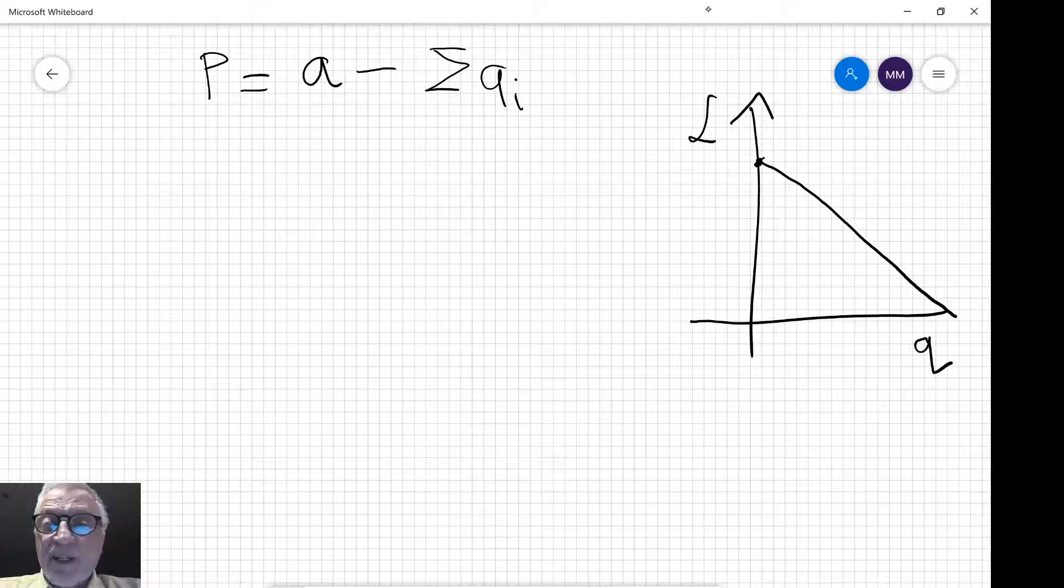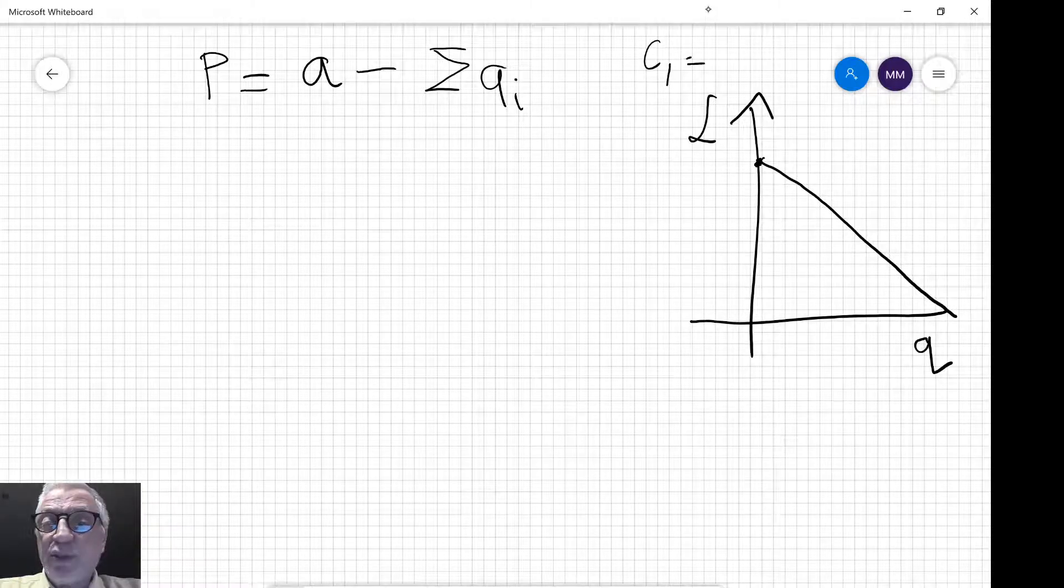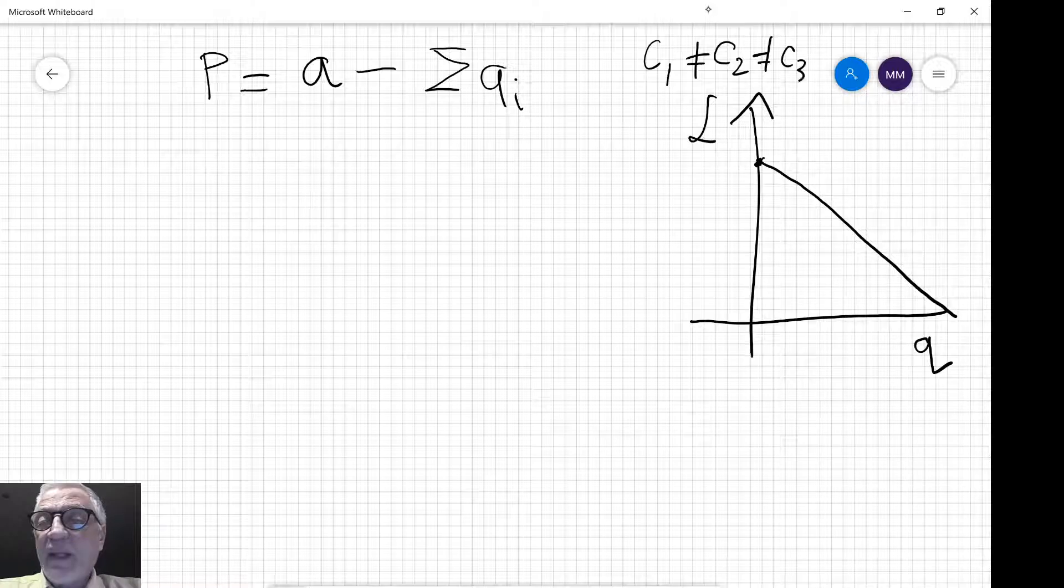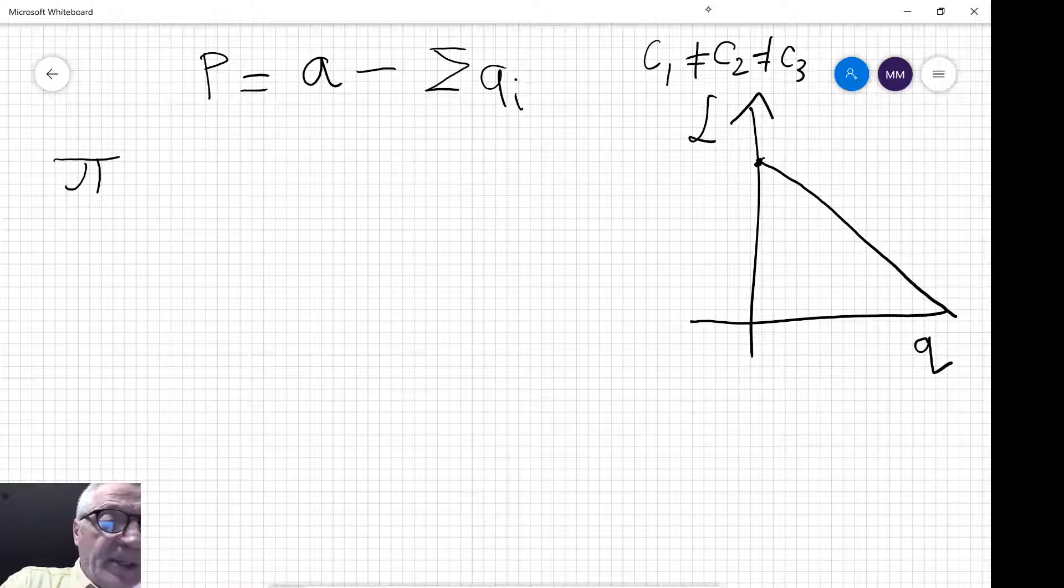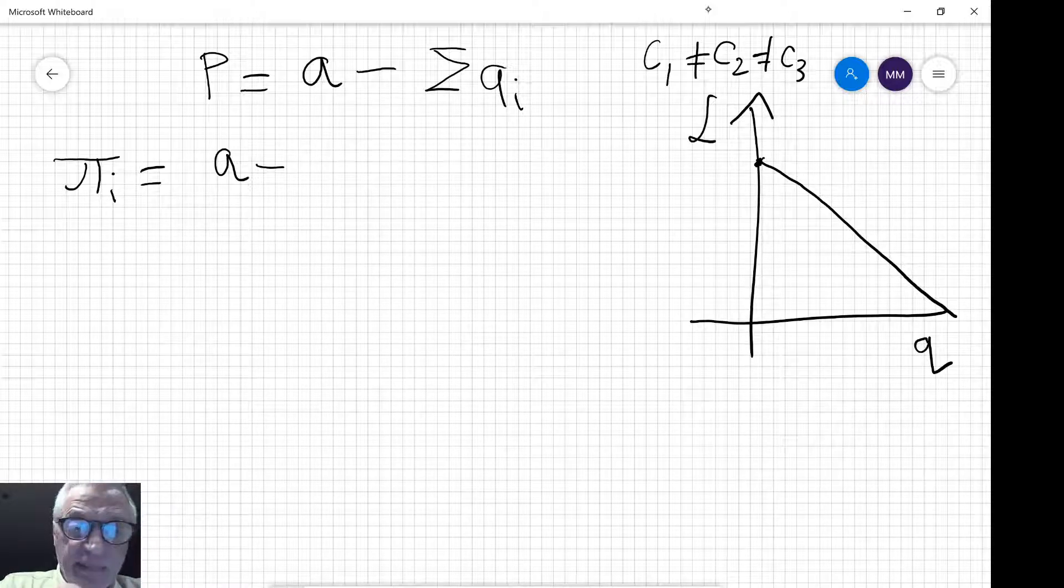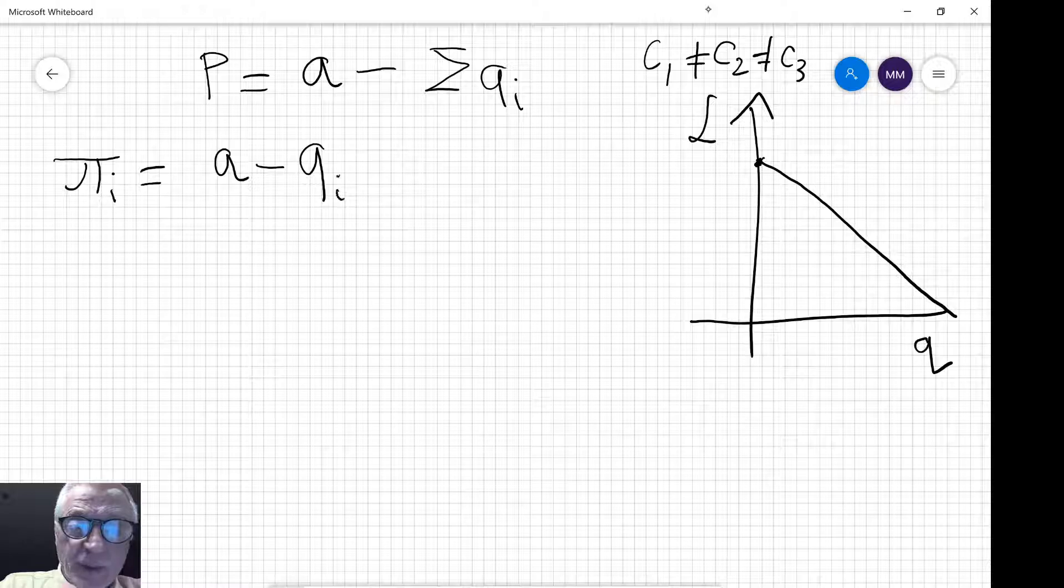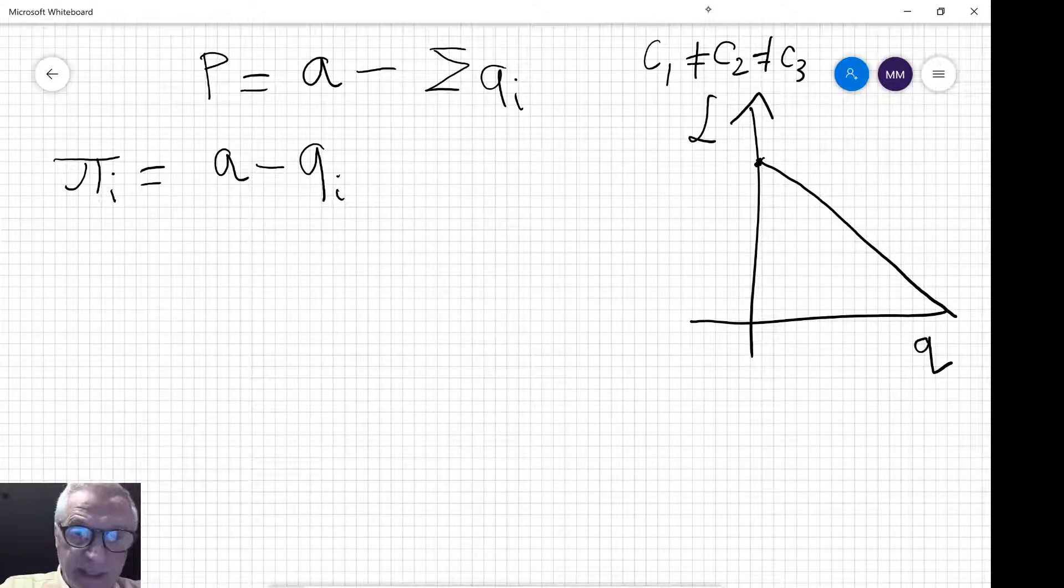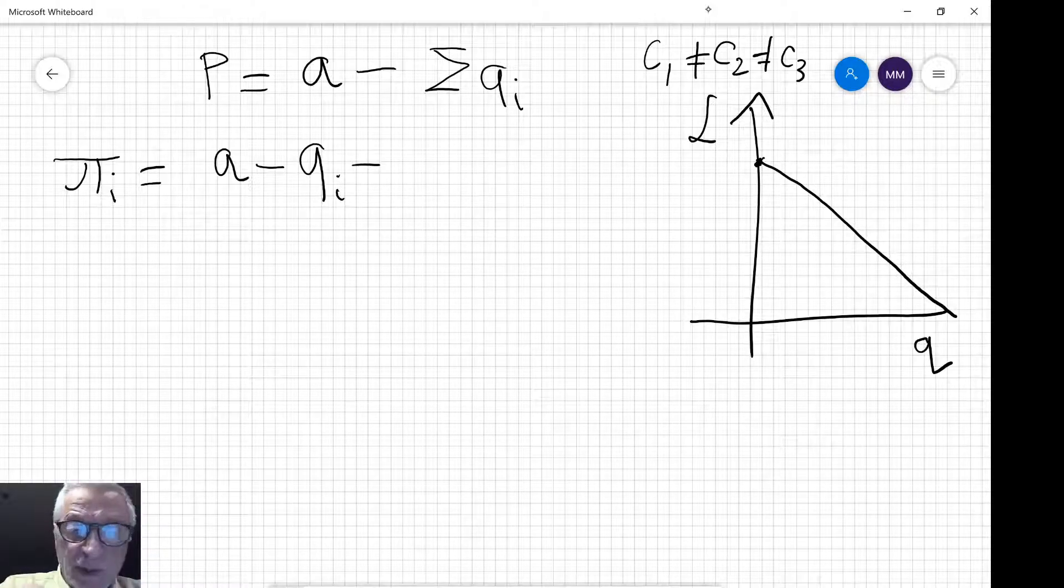All these various firms have different costs or potentially different costs. Now the profit of a typical firm I will be given by price, which I'm going to write in this particular form: our intercept minus the output produced by the firm in question minus the output produced by everybody else, which I'm going to denote by Q sub minus I.